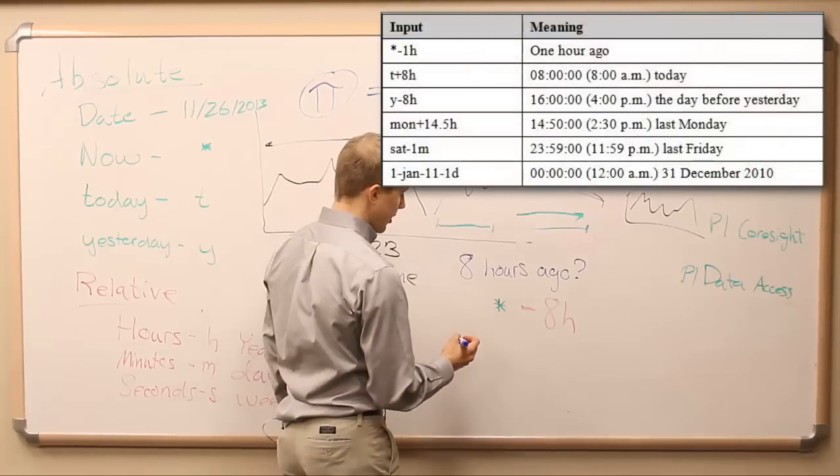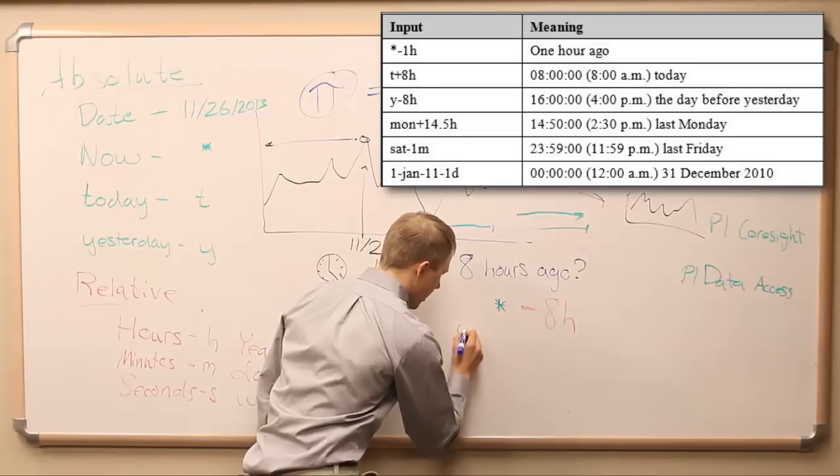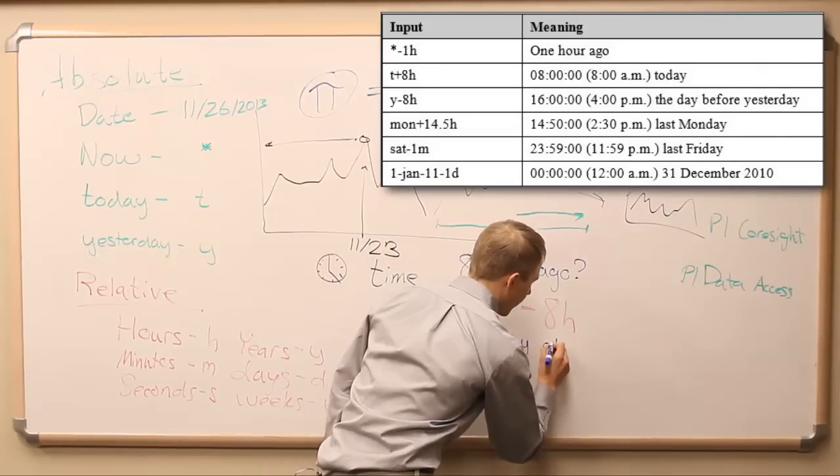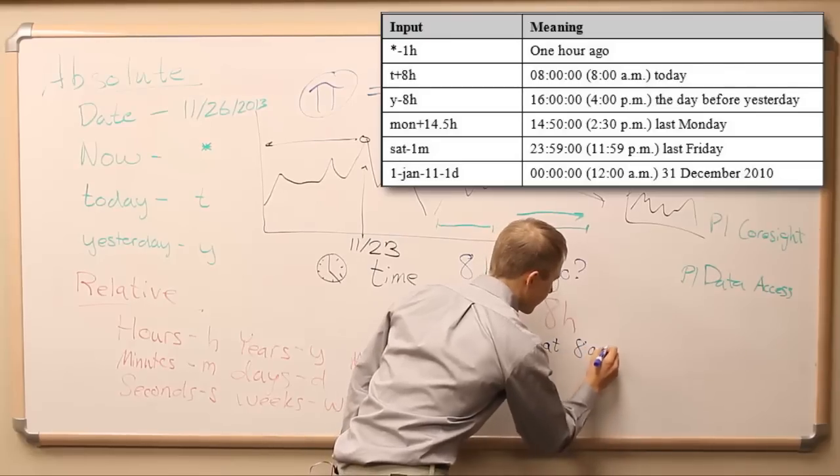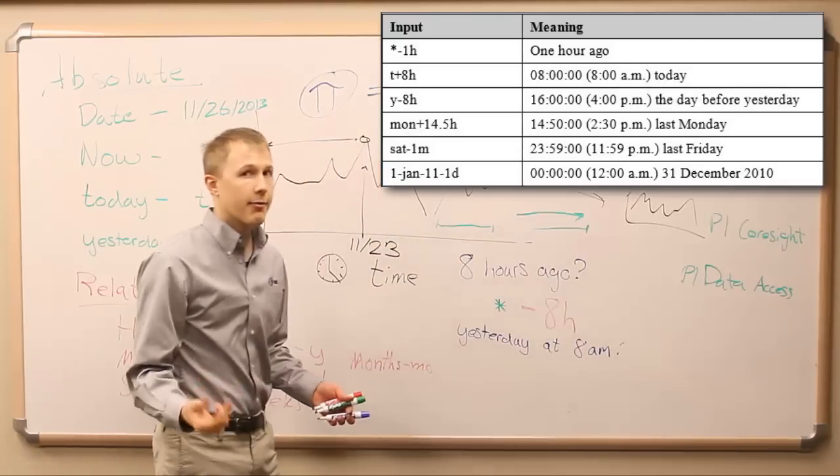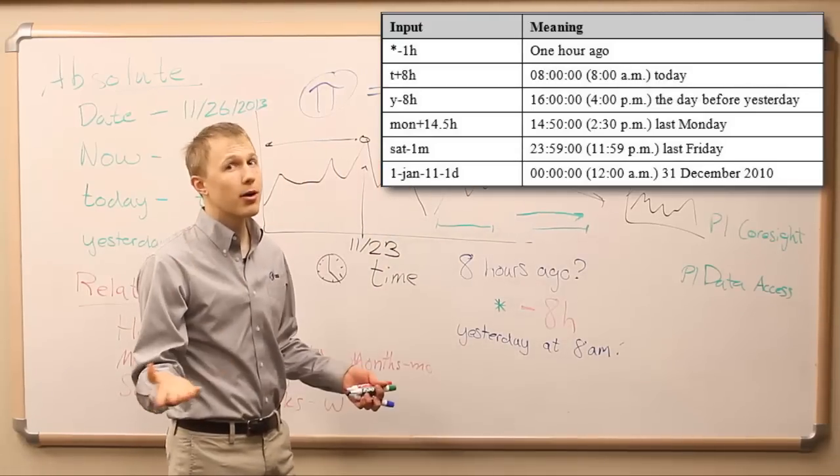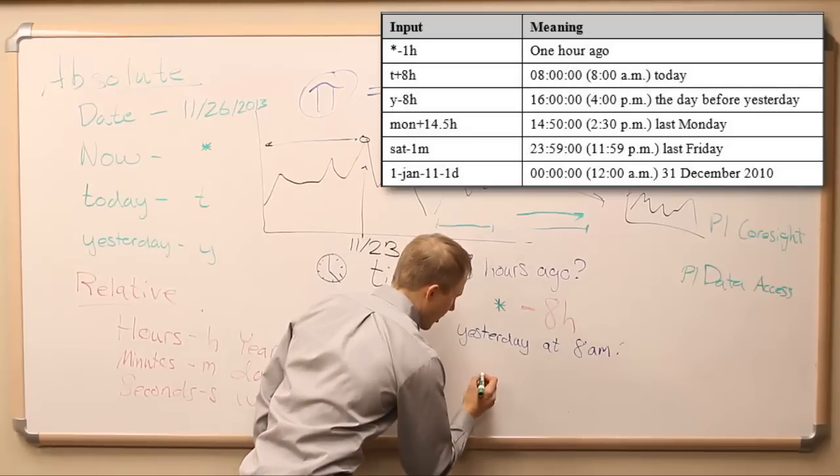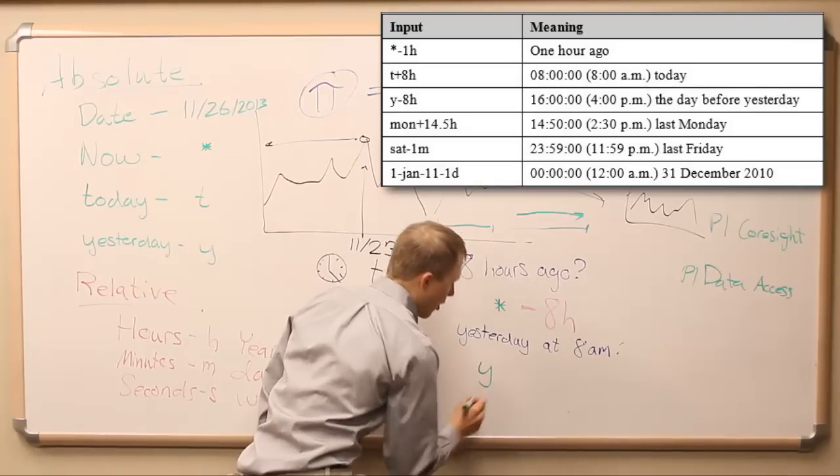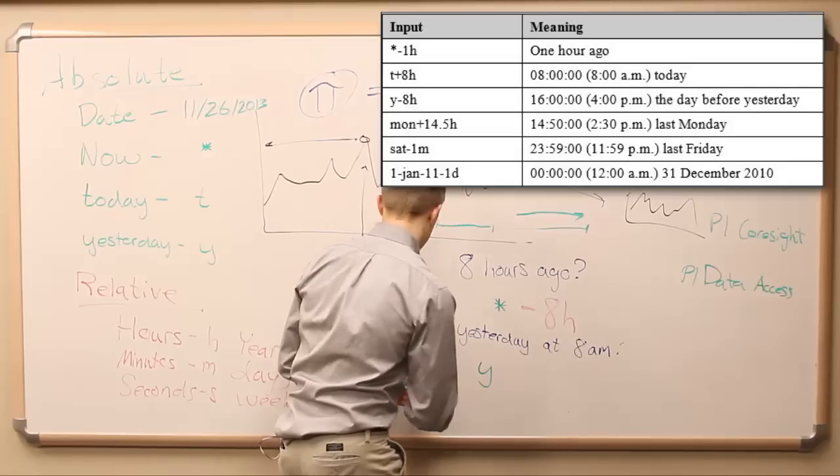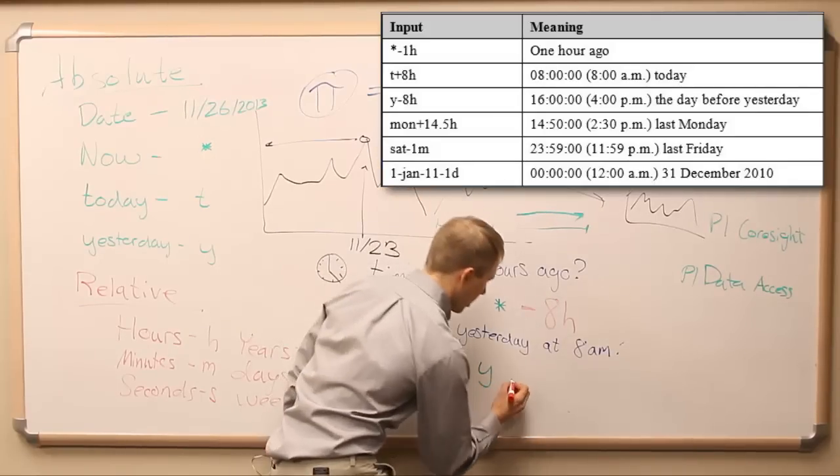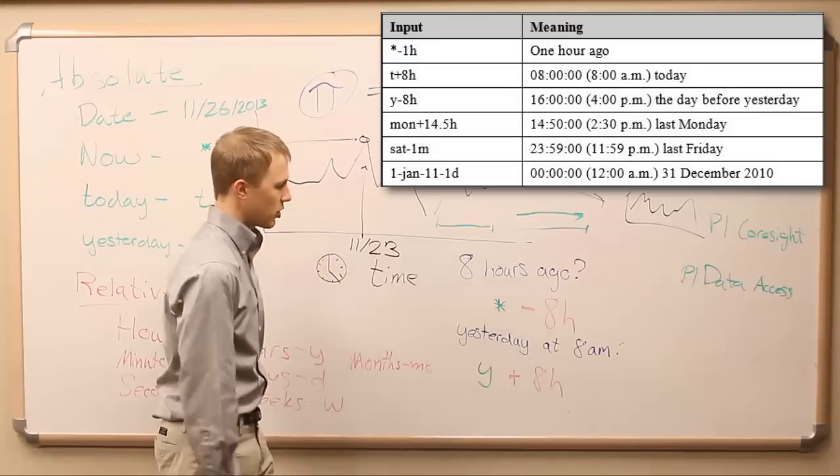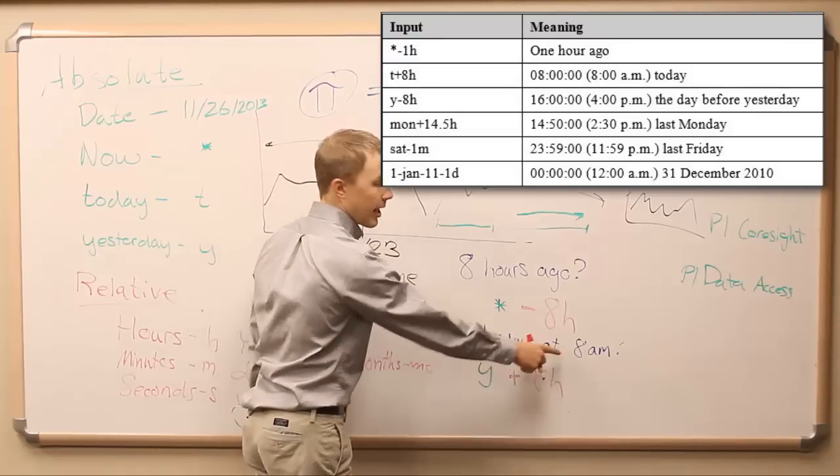I could also say something like, let's say, yesterday at eight a.m. How would I refer to yesterday at eight a.m.? Remember, yesterday is always changing. Tomorrow, it's going to be a different yesterday. I would refer to that, and there might be a few different ways of doing it. I would say, Y for yesterday. And then, probably, plus eight hours. So, that's yesterday morning at midnight plus eight hours equals eight a.m. Pretty good.